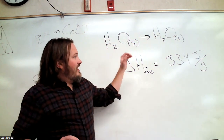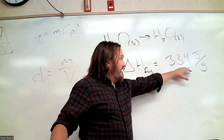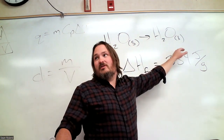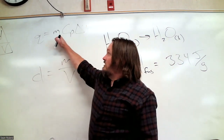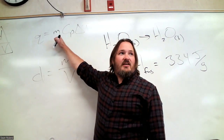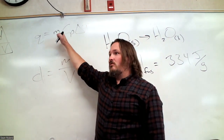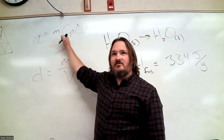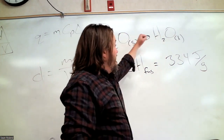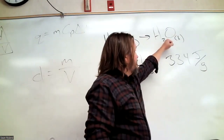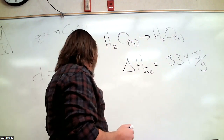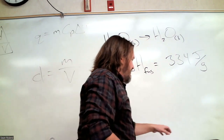The fact that you have this delta H number and the fact that it's a phase change is what tells you you're not going to use Q = mcΔT, because you don't have a delta T associated with it. You instead have a phase change.